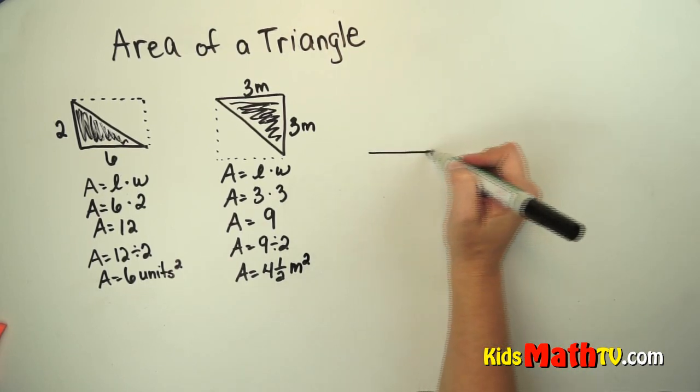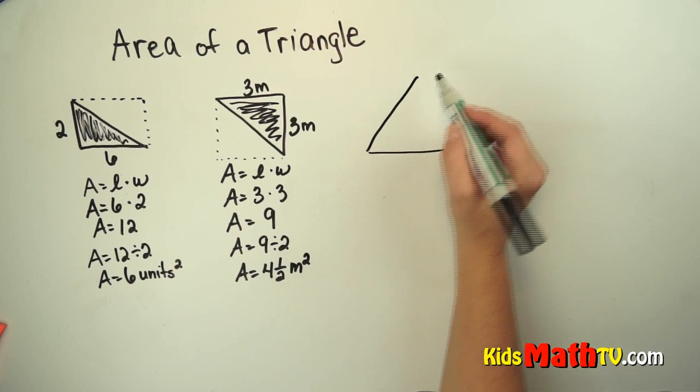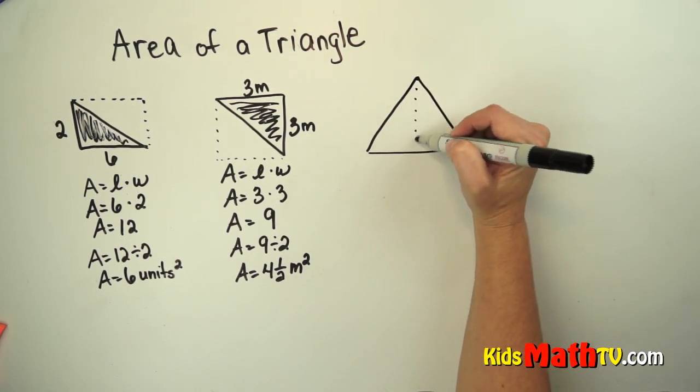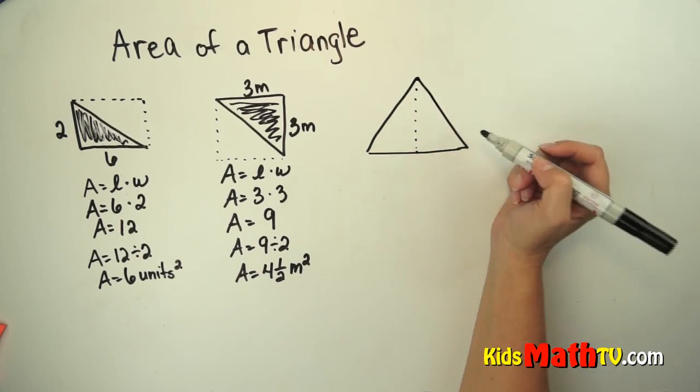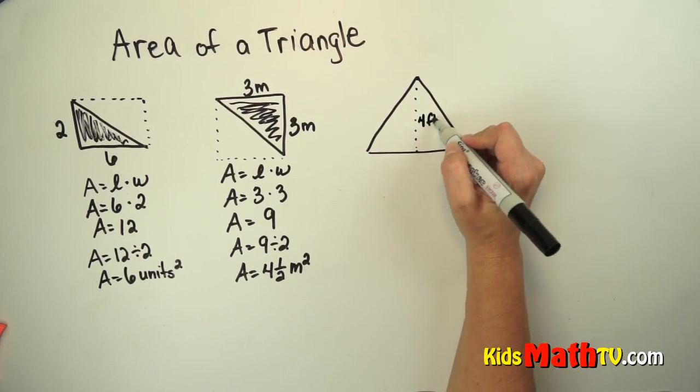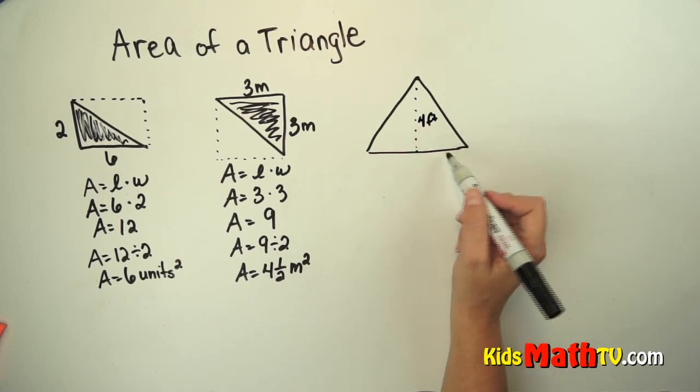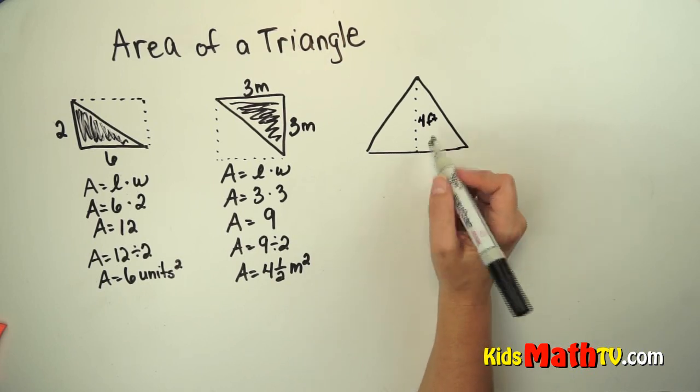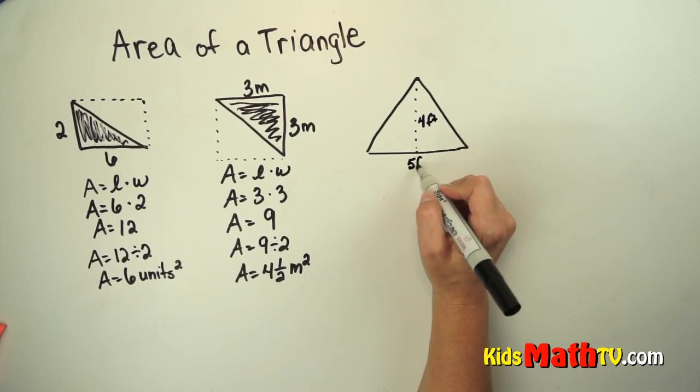Let's try another one. This one's a little bit more tricky. In this case, we call this the height of a triangle. We're going to call that 4 feet. And down here is the base, and we're going to have a base of 5 feet.